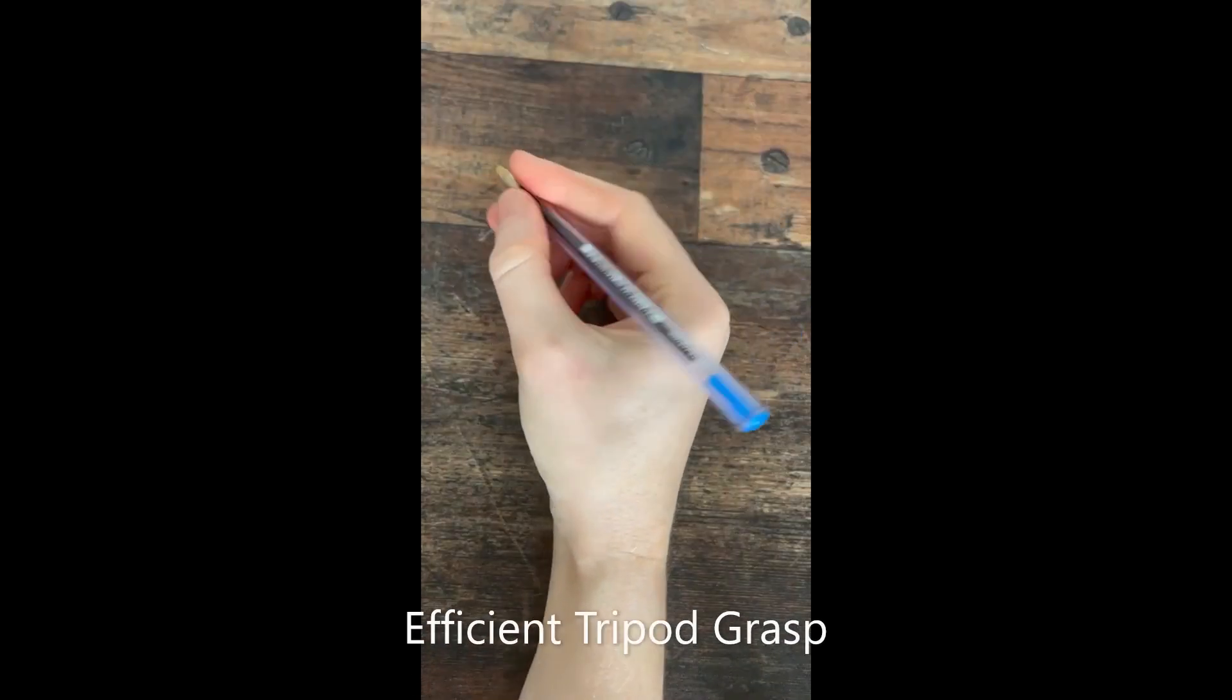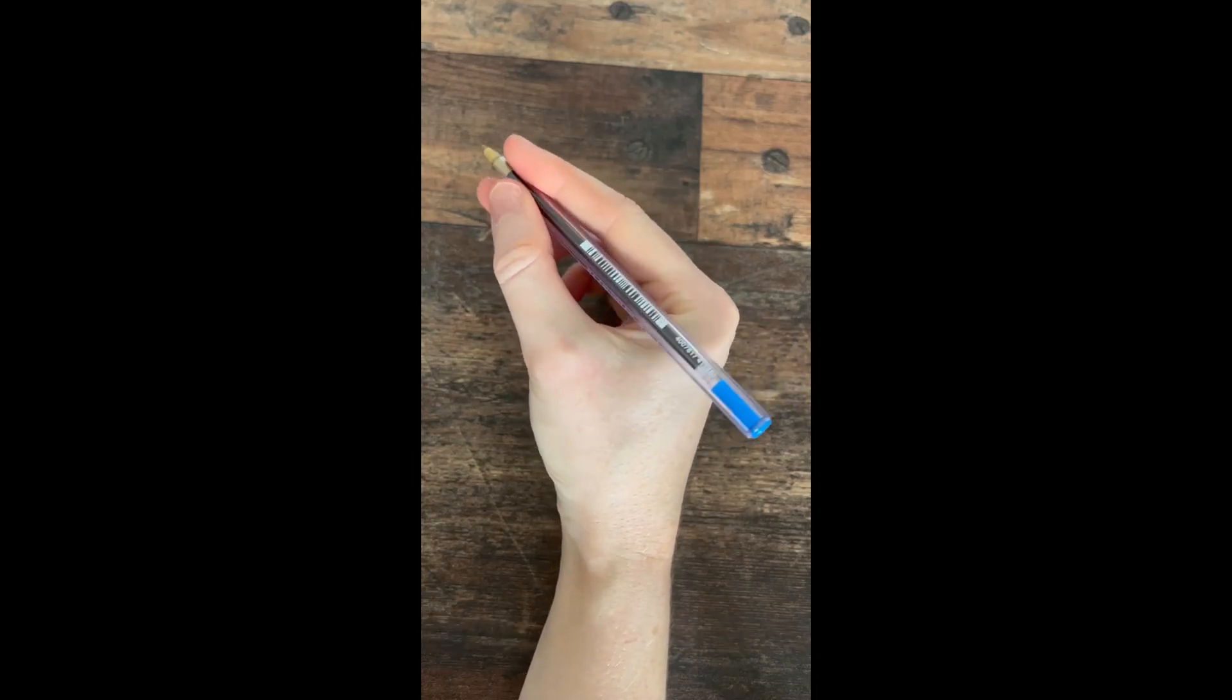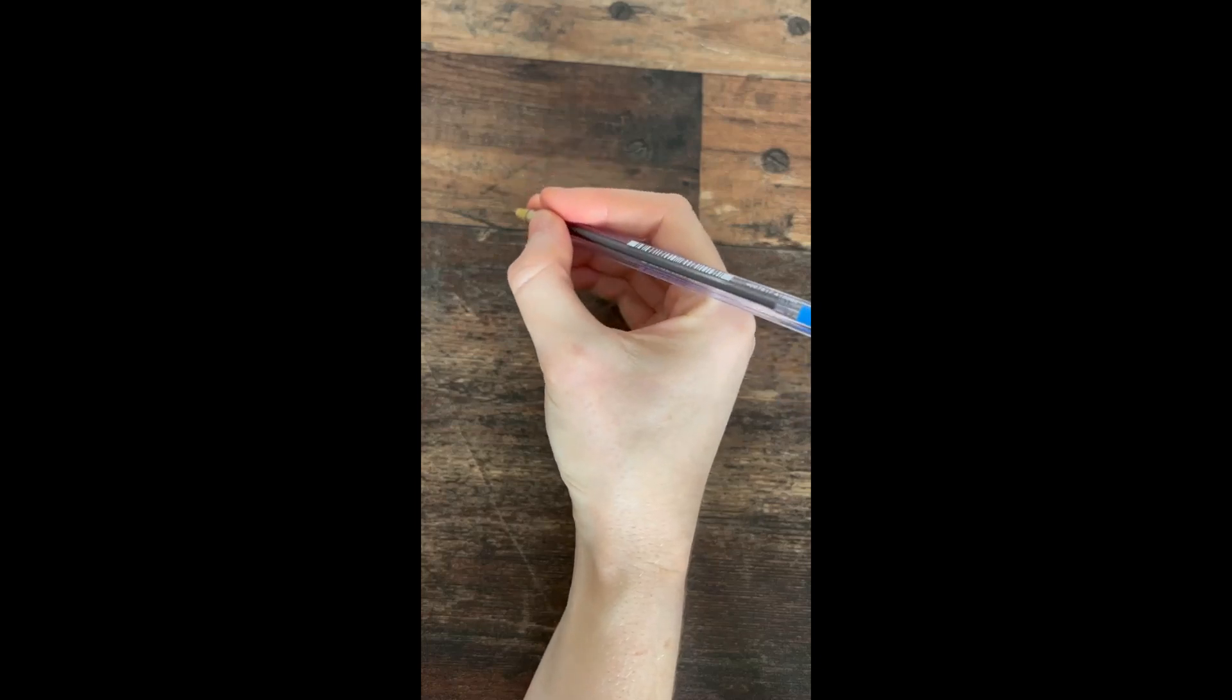The correct way to hold a pencil is between your index finger, thumb and middle finger and this is often called a tripod grasp. Some children add a forefinger which can also work well.